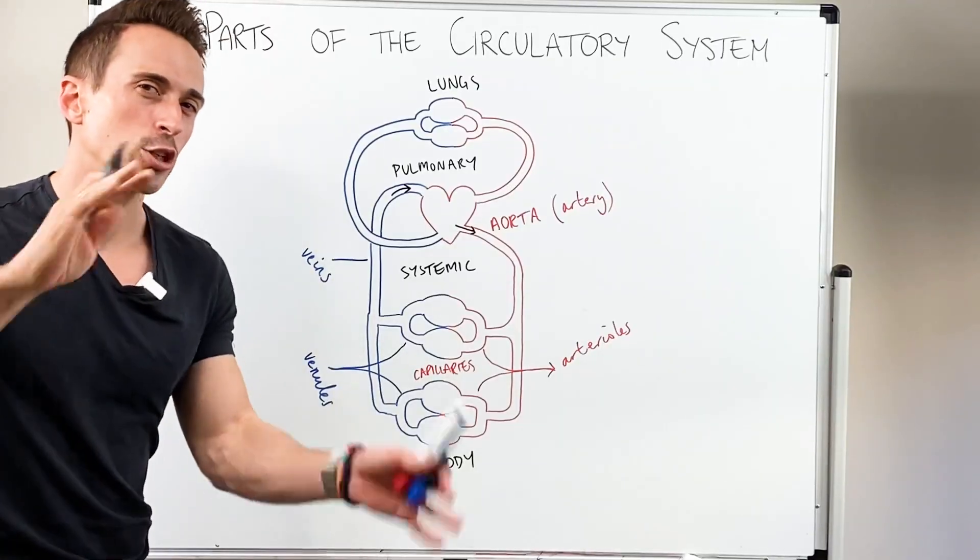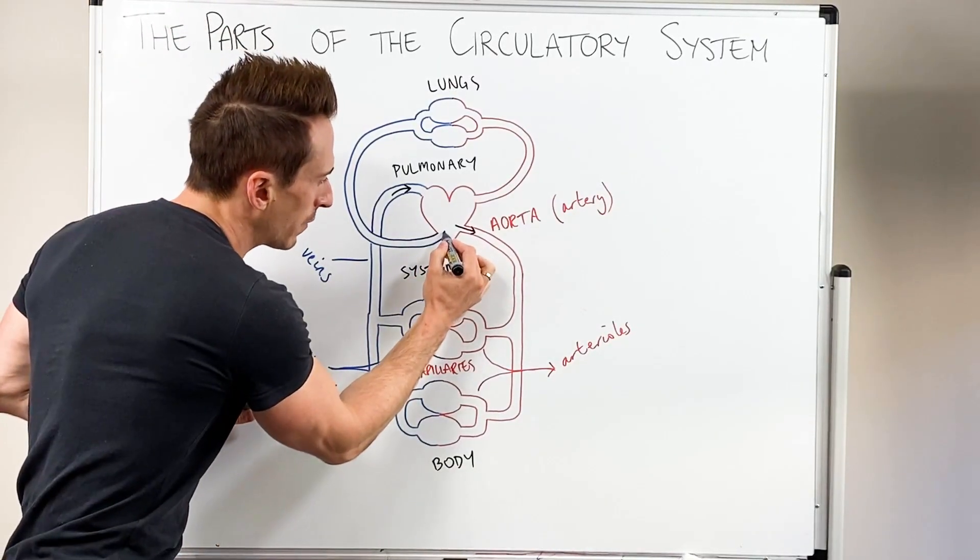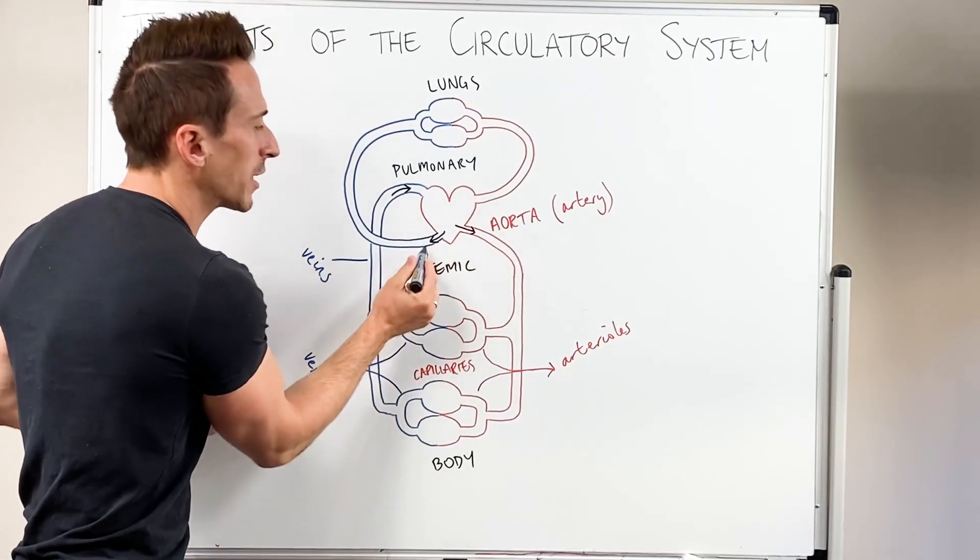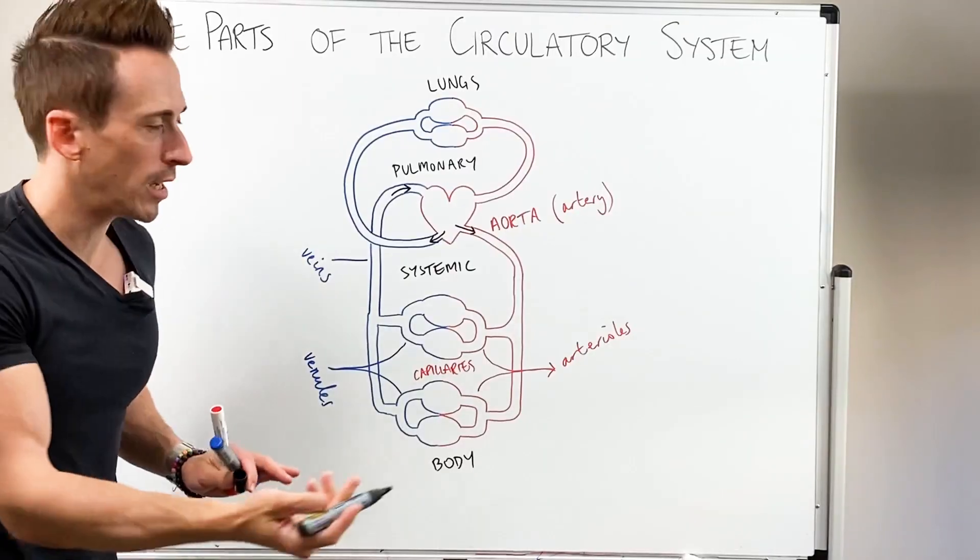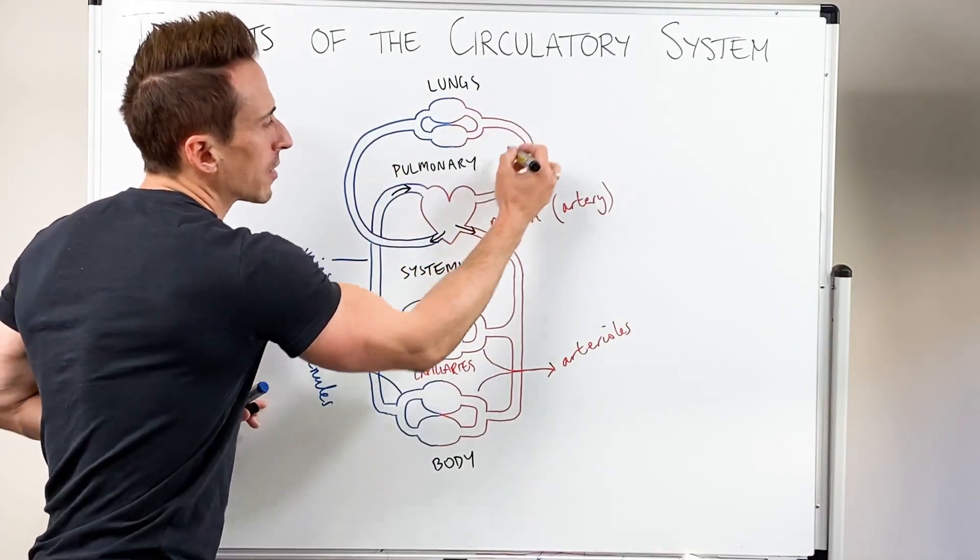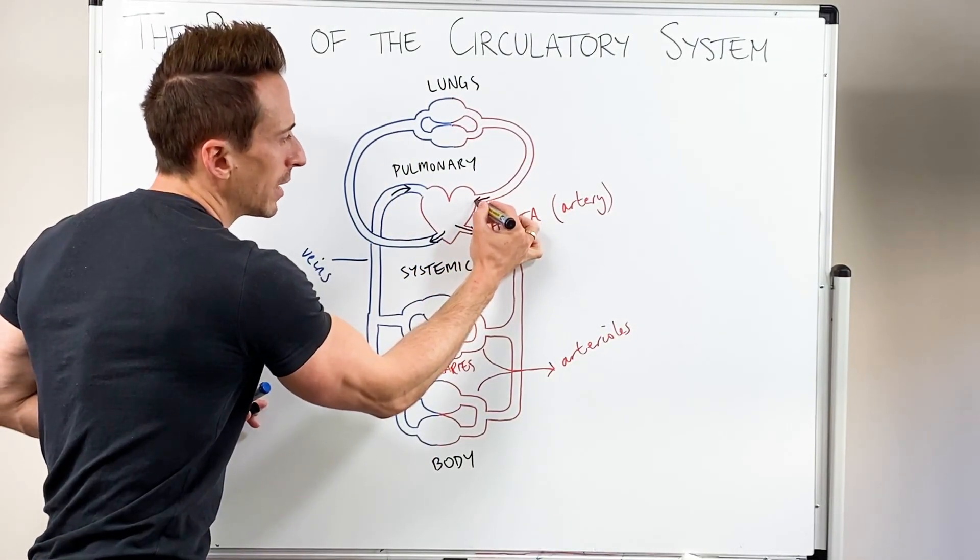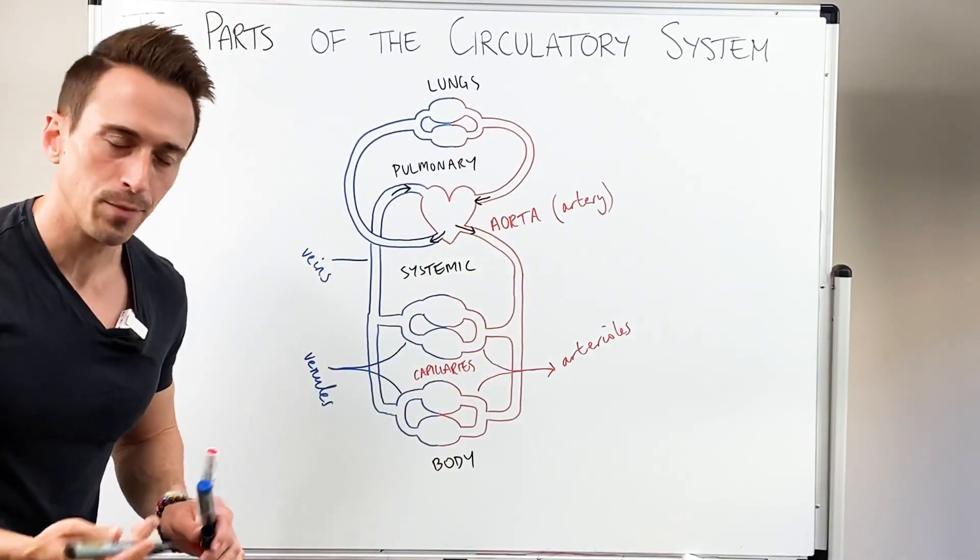But if you look at the pulmonary circulation, it's flipped. This is leaving the heart, so that's actually an artery and it's deoxygenated. And that's called the pulmonary artery. And this is going to be a vein because it's coming back in, yet it's oxygenated.